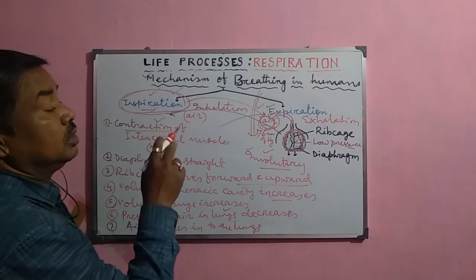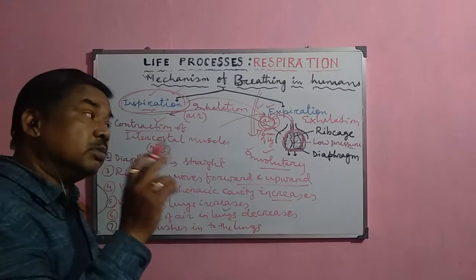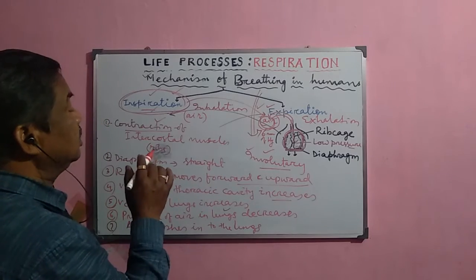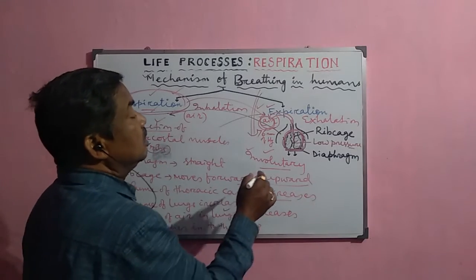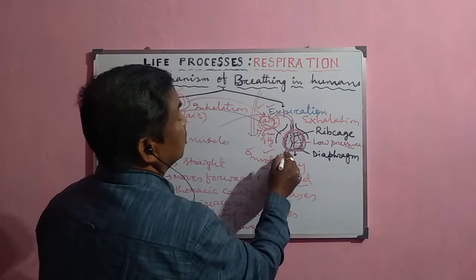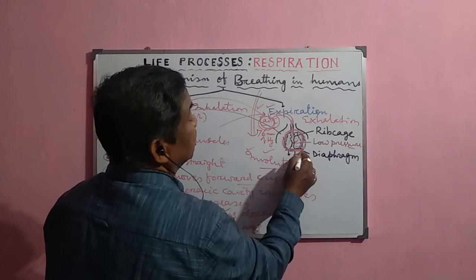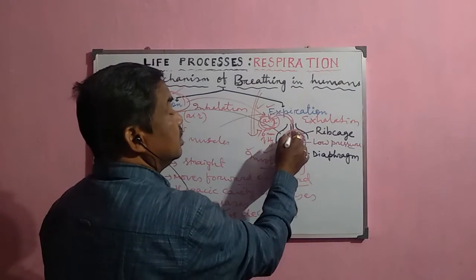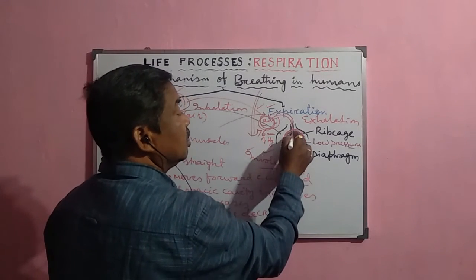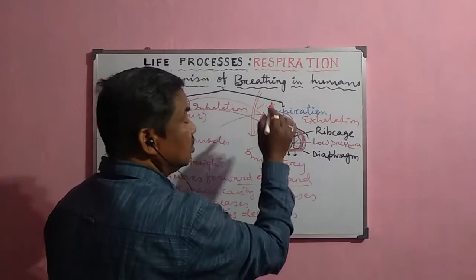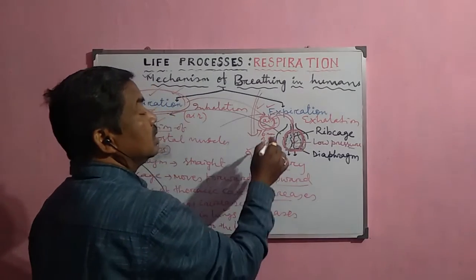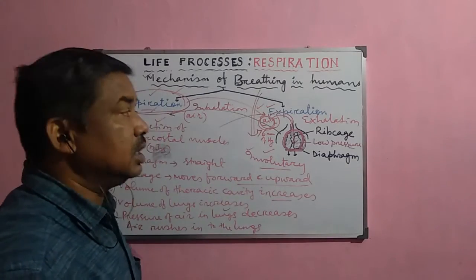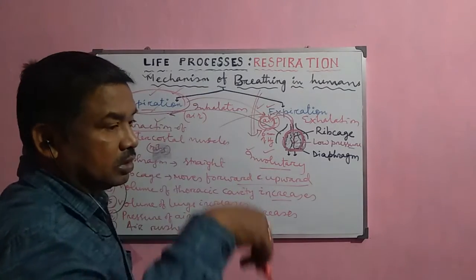This process is called inspiration — the first phase by which the intake of air occurs. It is going on automatically. What we are doing is straightening the diaphragm and increasing the thoracic volume; automatically the pressure decreases and air enters in.